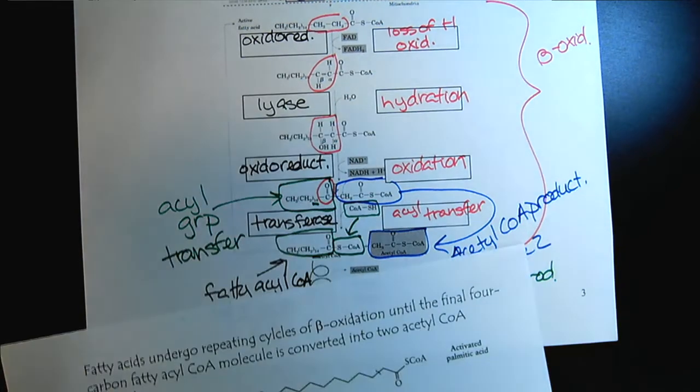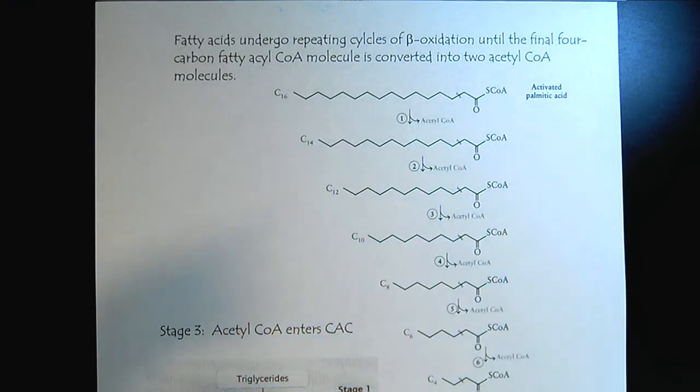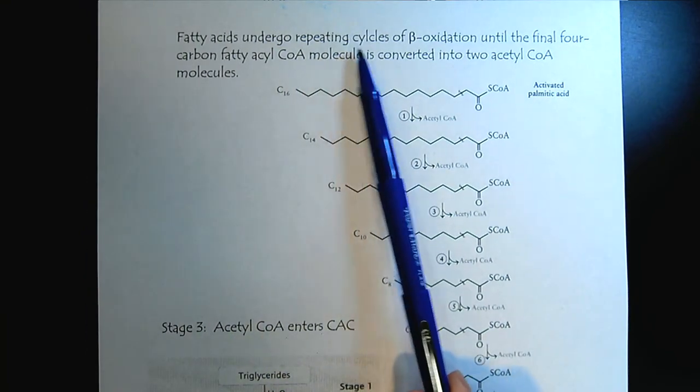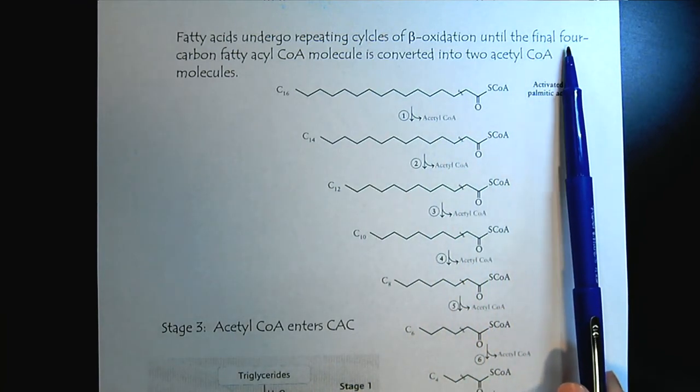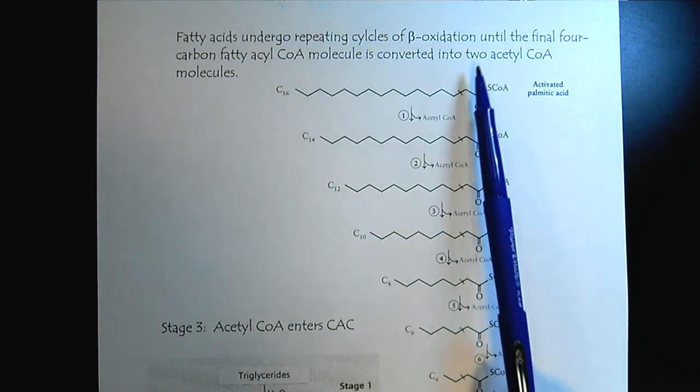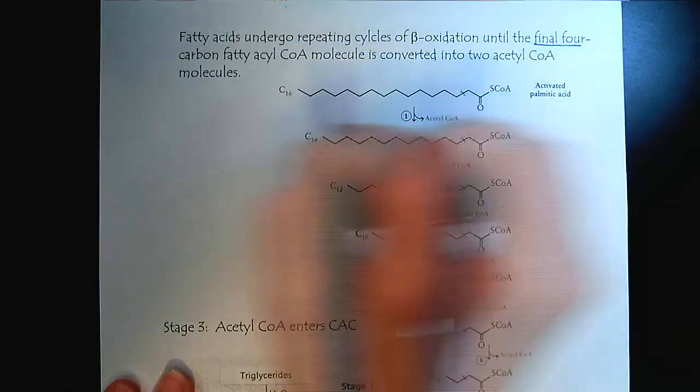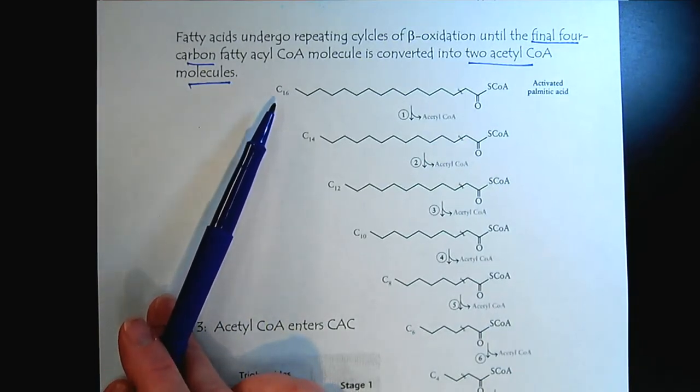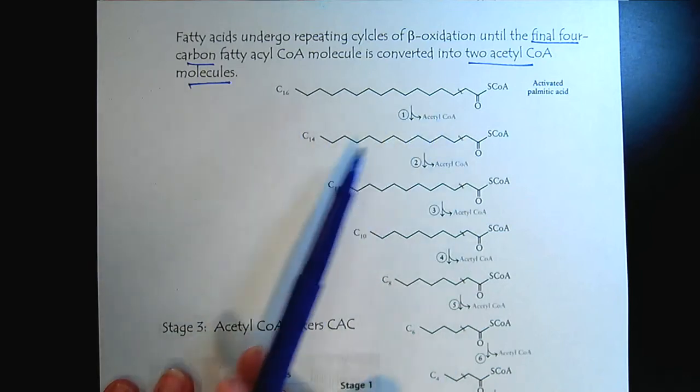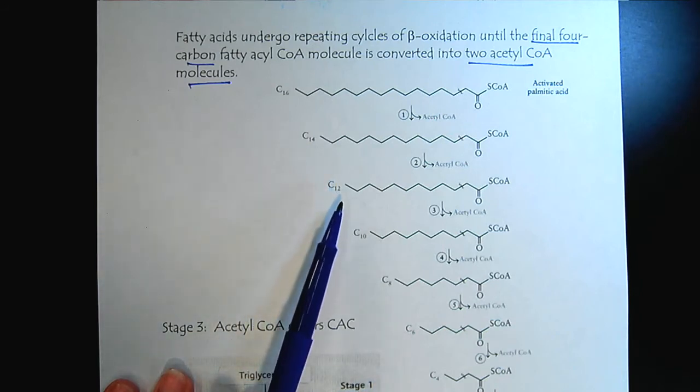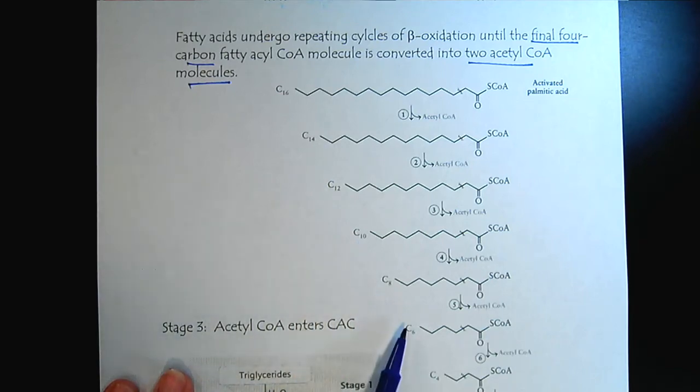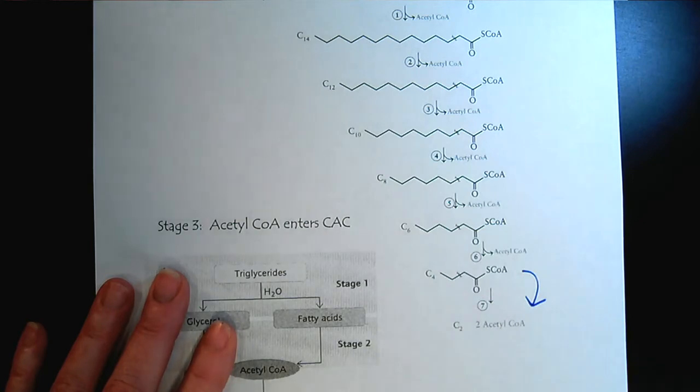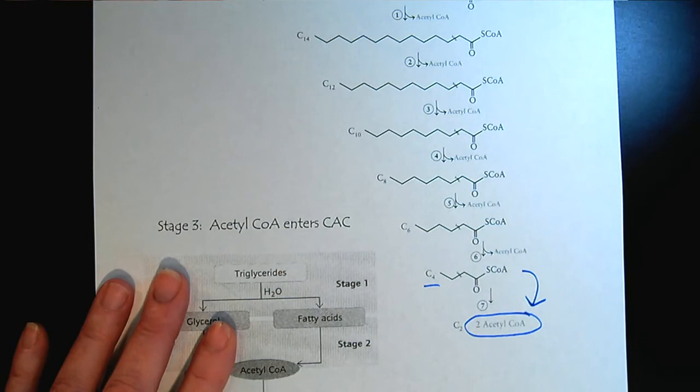So what I was doing my best to explain to you was captured here, that the fatty acids undergo repeating cycles of beta oxidation until we get to the final four-carbon fatty acyl CoA, which is then converted into two acetyl CoAs. So for example, if we started with a 16-carbon fatty acid, after the first cycle, then we would have one molecule of acetyl CoA and then we'd have 14. After the next turn, 12, 10, 8, 6, 4, and then when we get to that last cycle, we had four carbons and so we're going to end up with two molecules of acetyl CoA.